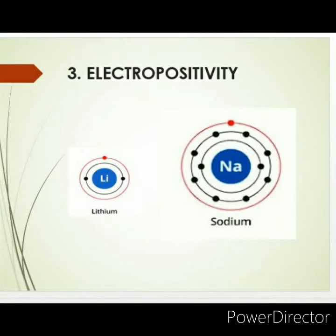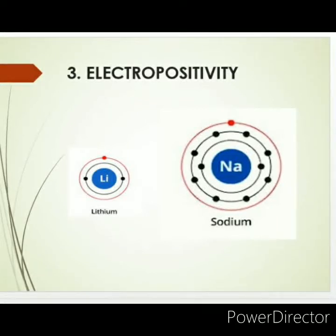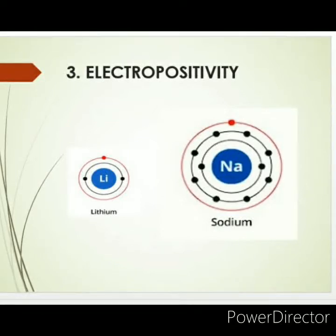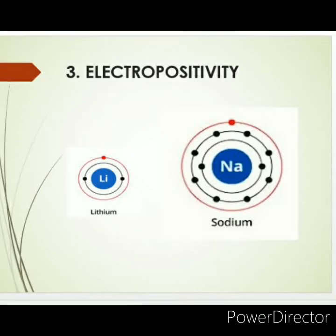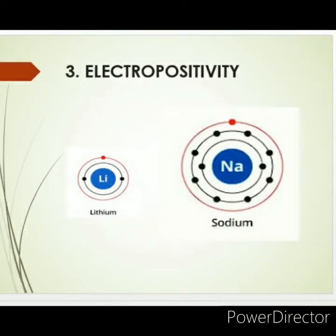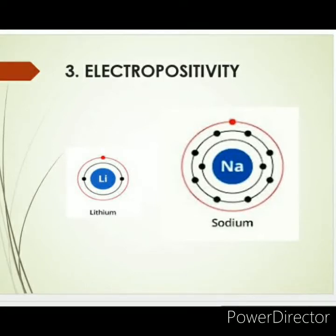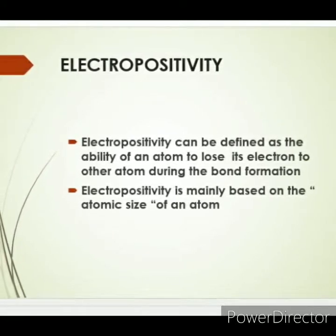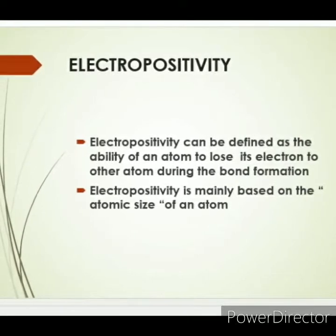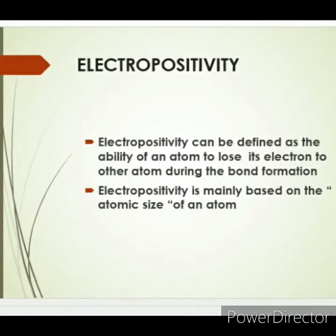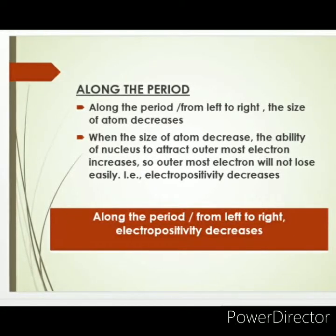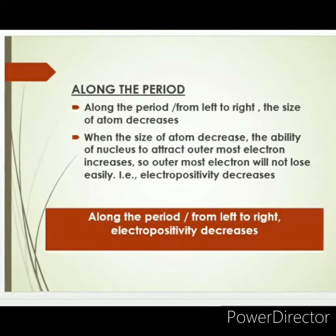So, which atom will have the tendency to lose its electron easily? Obviously it is sodium, because it does not have a strong attraction over its valence electron. Since there is no strong attraction, it will lose its electron. But lithium will not lose its valence electron easily because it has a strong attraction between the valence electron and the nucleus. So electropositivity can be explained using atomic size. Electropositivity is defined as the ability of an atom to lose its electron to another atom during bond formation, and it is mainly based on the atomic size of an atom.